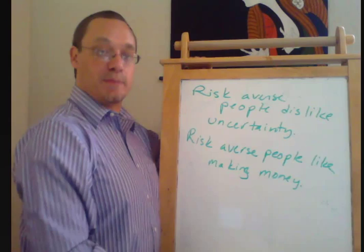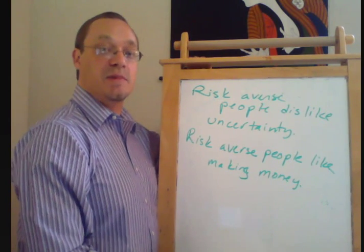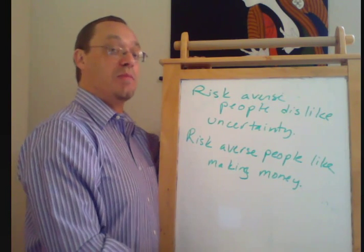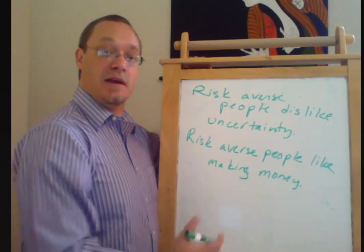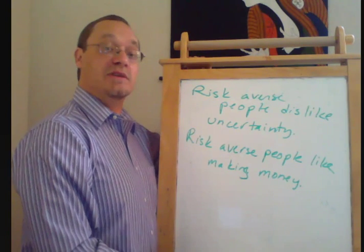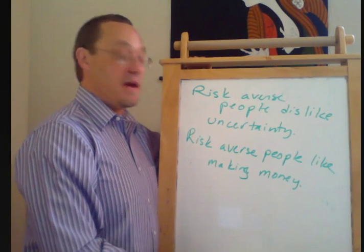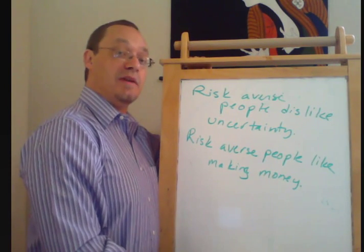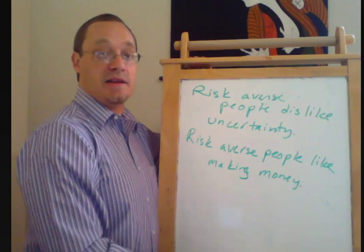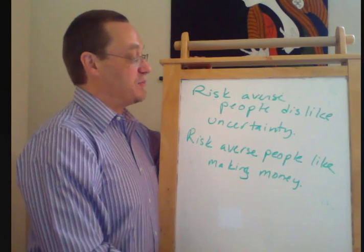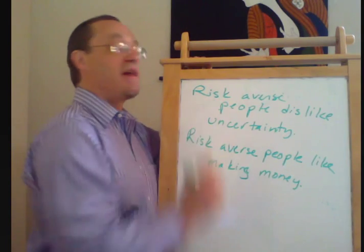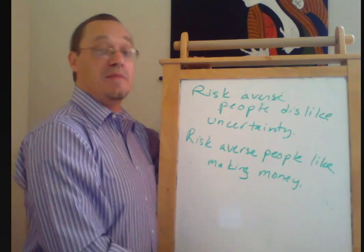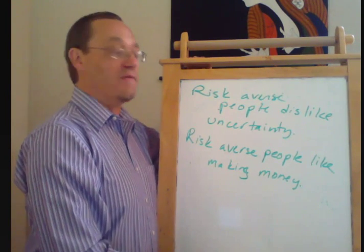So if a risk-averse person has an investment opportunity that makes money on average but exposes them to some probability of losing money, they'll be a little bit torn. Really highly risk-averse people might go, you know what, even though this investment makes money on average, there is some probability of losing money, so I dislike it and therefore I don't take it. Other risk-averse people would go, you know what, I dislike the fact that I might lose money, but there's a lot of upside potential here and I'm not super risk-averse, so I'm going to go ahead and make that investment.